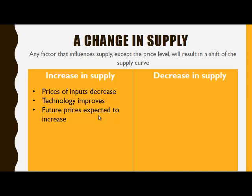When future prices are expected to increase, producers will want to produce more because they will want to profit on the higher expected future prices. When the number of firms increases, more can be produced at the same price.